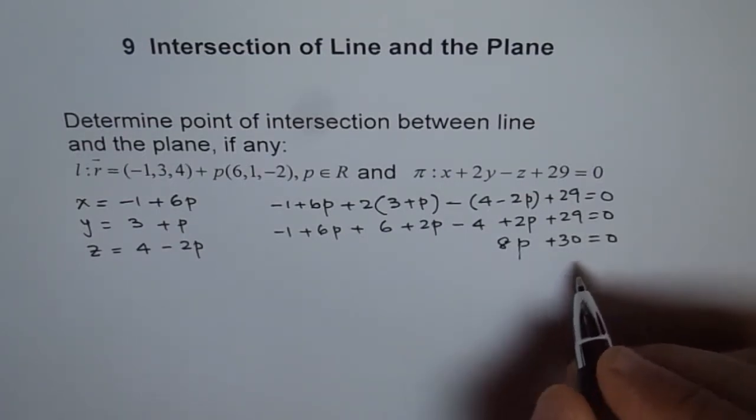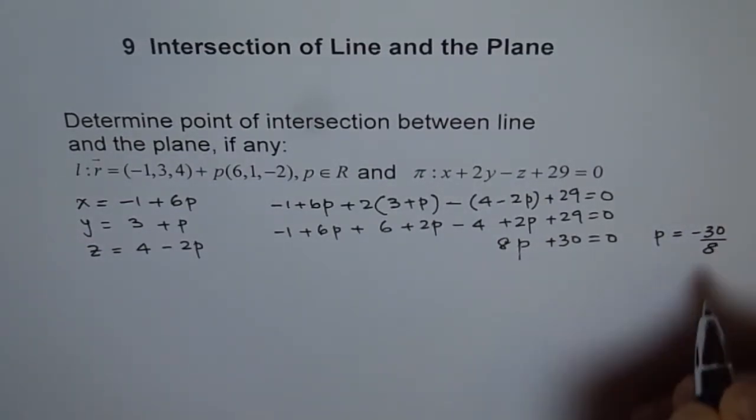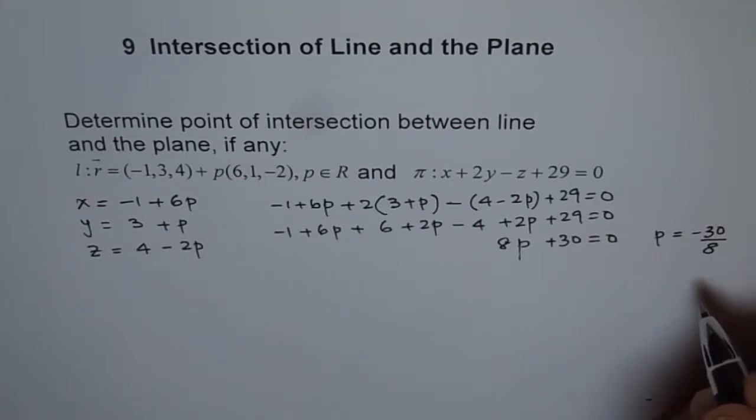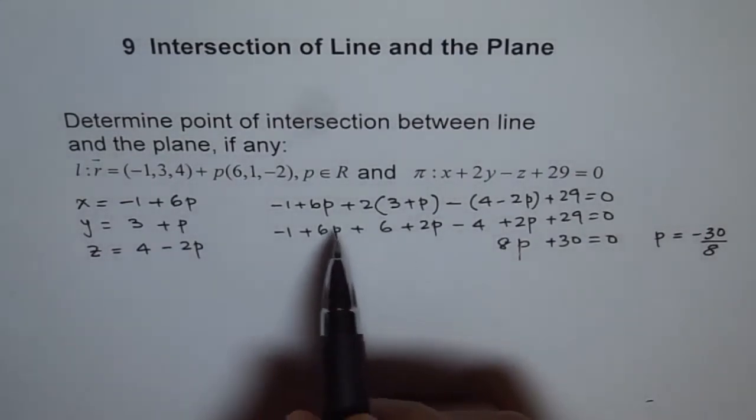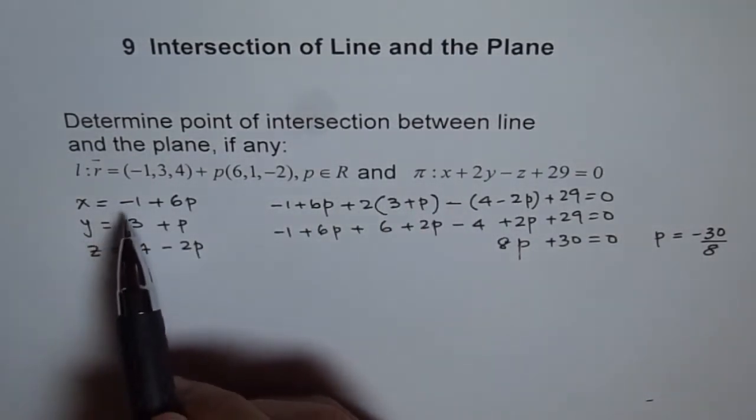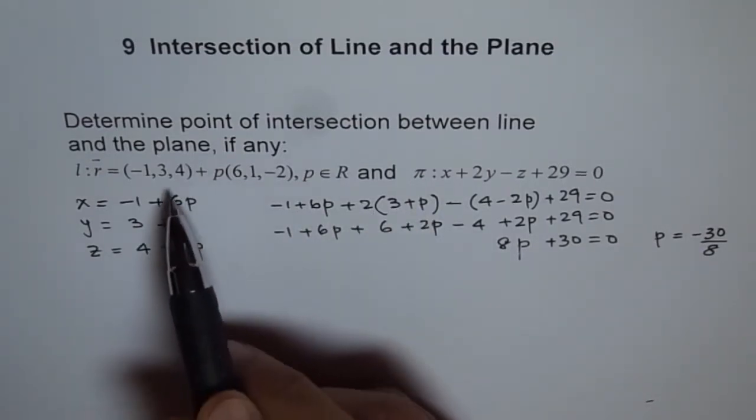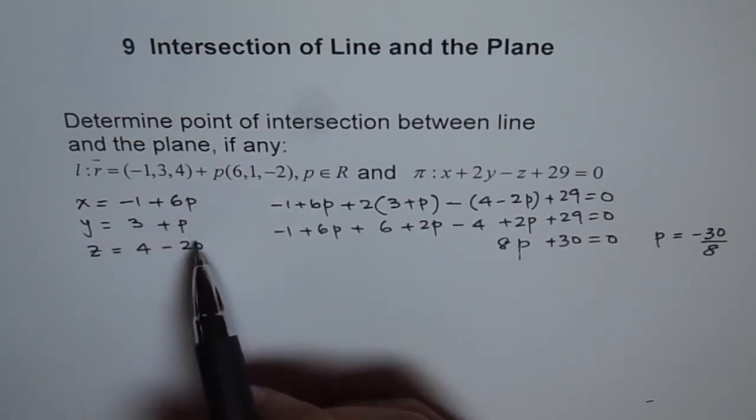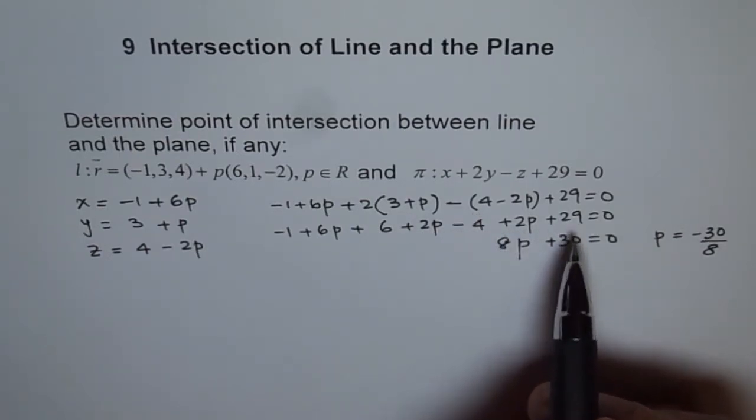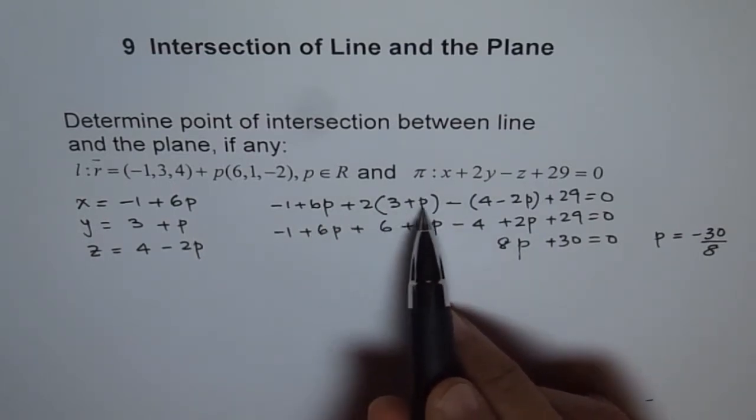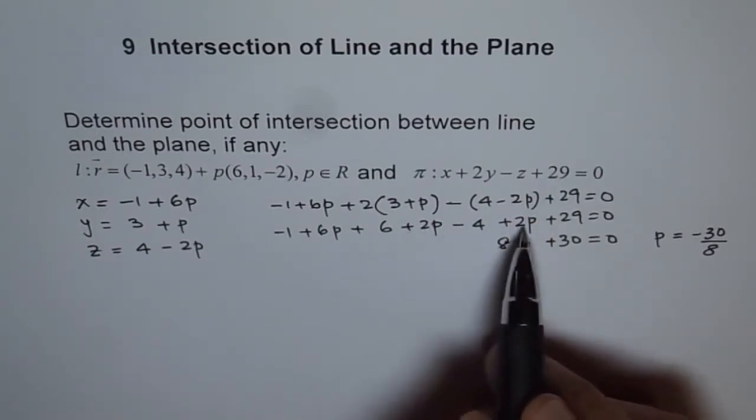So that gives us that p equals to minus 30 over 8, which can be simplified as... okay, let me just check again, the values of the numbers. 2 times 3 plus p and minus 4 plus 2p plus 29. So we get 6 and 2, 8, 8 and 2, 10. 6 and 2, 8 plus 2, 10.